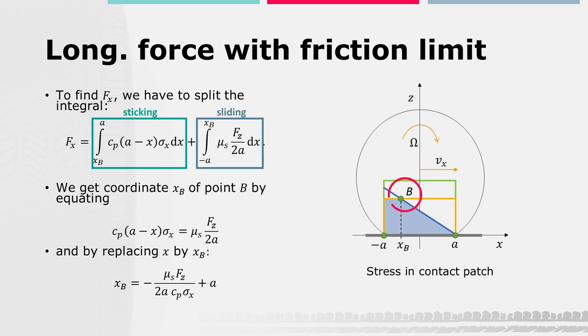The coordinate xB of point B, shown in the figure on the right side, is the position where the local stress tau due to adhesion equals the maximum stress tau_max limited by friction — in other words, the point where the stress due to brush elements sticking equals sliding. Tau_max is the static friction mu_s times the pressure distribution qz, which equals mu_s times the vertical force divided by 2a.